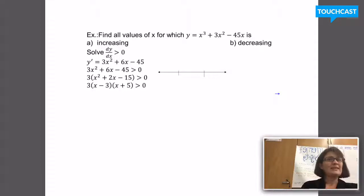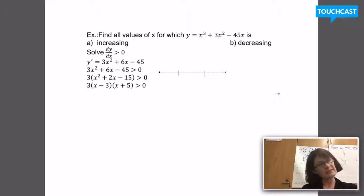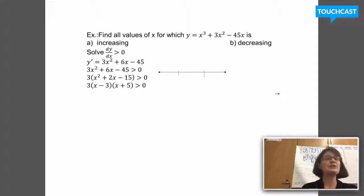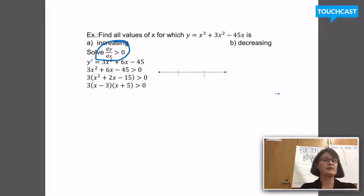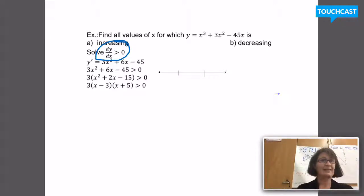Here's a similar problem. I'd like to find the values of x for which the function y = x³ + 3x² − 45x is increasing, and then find all domain values for which the function is decreasing. To find where a function is increasing, I need to know where its derivative is positive — that's the inequality I've written: the derivative must be greater than 0. So my first step is to find dy/dx, which is 3x² + 6x − 45.